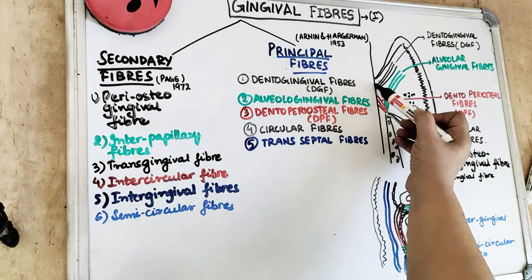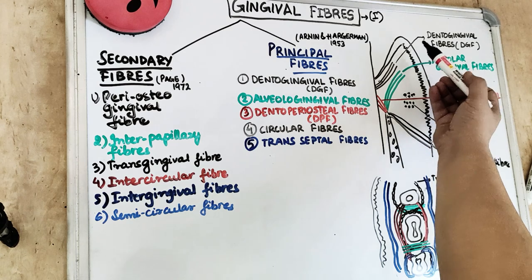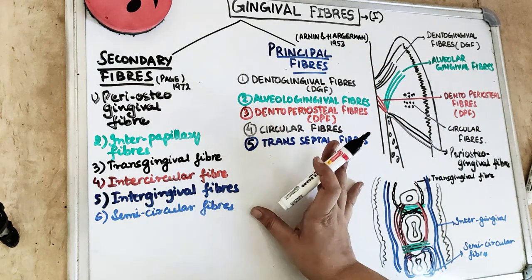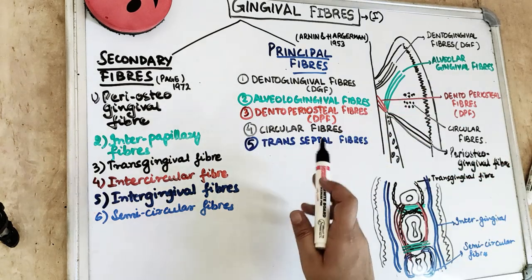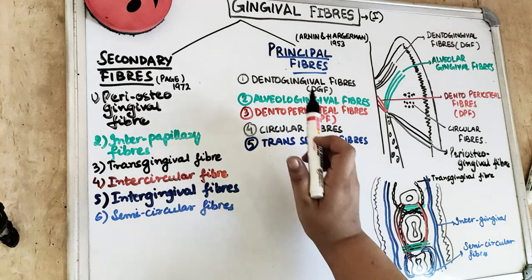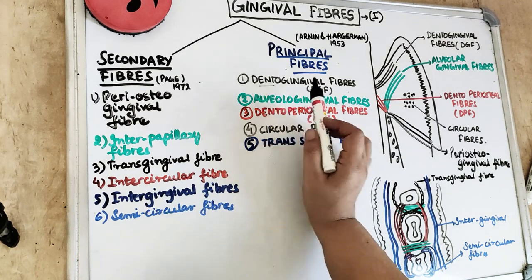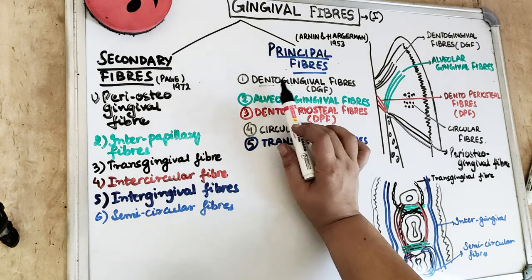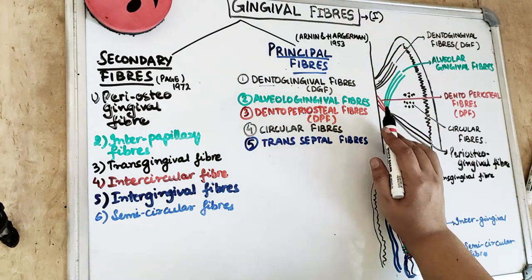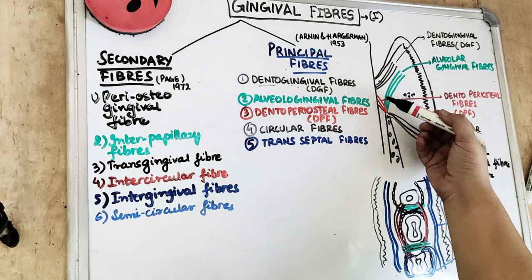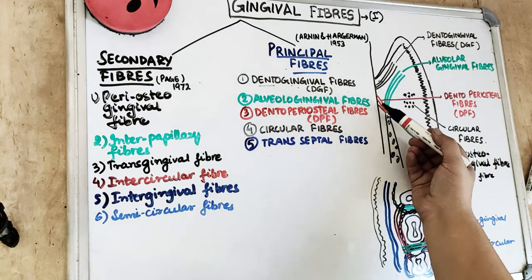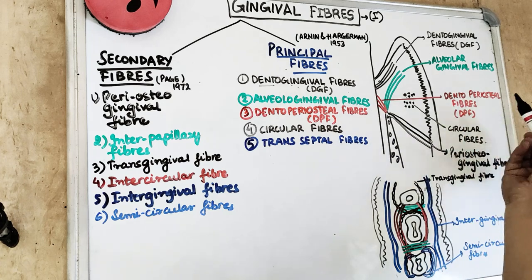To learn these principal fibers, break the term — as I have always been telling you. 'Dento' means from the teeth going into the gingival. So dentogingival fibers come from the teeth. There are only two types of fibers coming from the teeth: the dentogingival fiber and the dento-periosteal fiber.